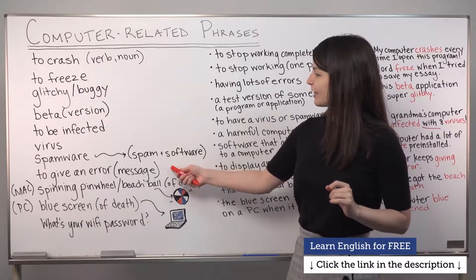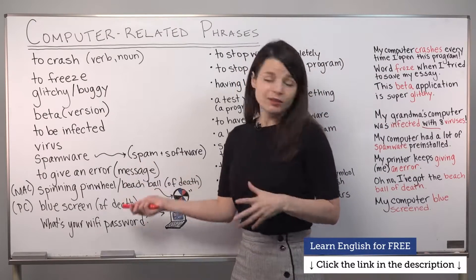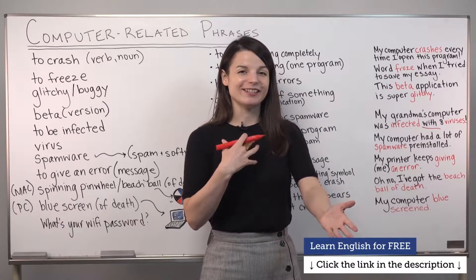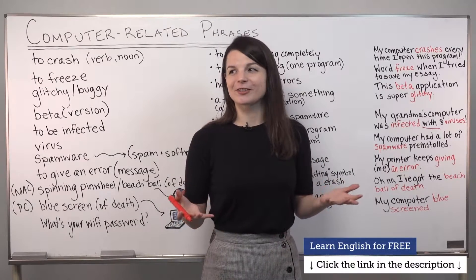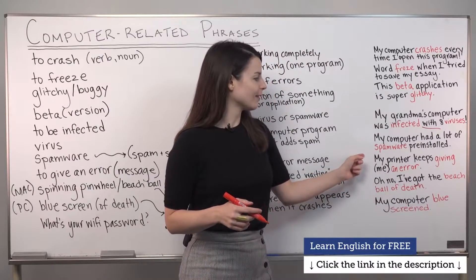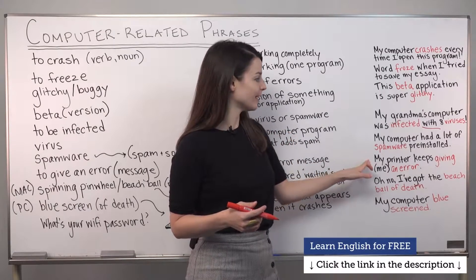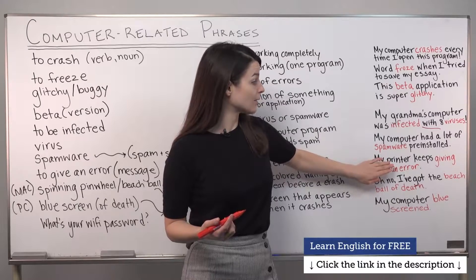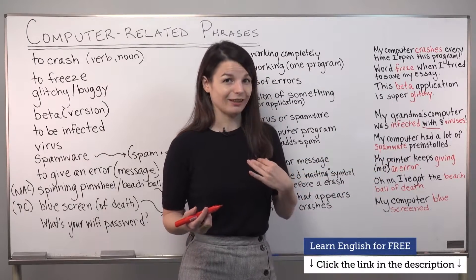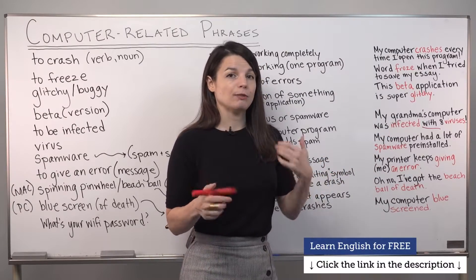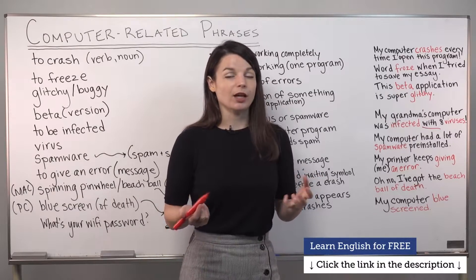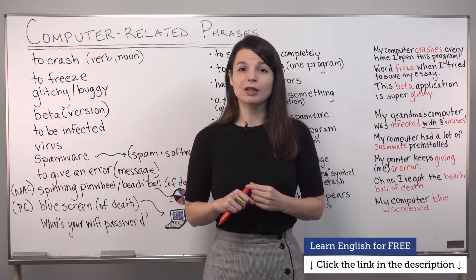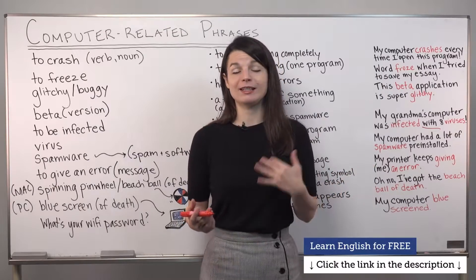The next expression is 'to give an error' or 'to give an error message,' which means to display an error message. We use 'give' because it's like the computer is giving us something. Example: 'My printer keeps giving me an error.' I'm using the progressive tense here because I'm complaining. You could say 'my printer keeps giving an error,' or include 'me' to show you are the one receiving the error. We use 'give' rather than 'display,' which sounds too formal — more like something from a computer manual.